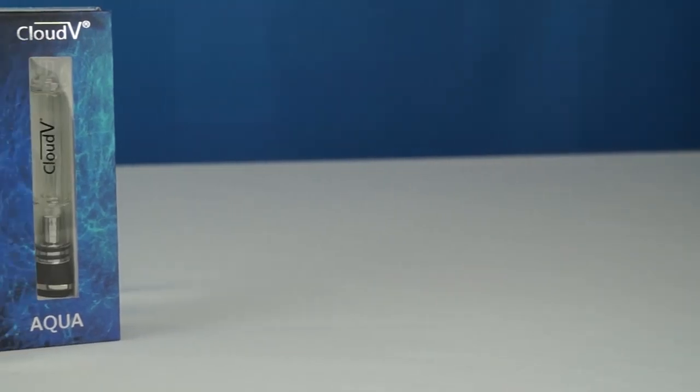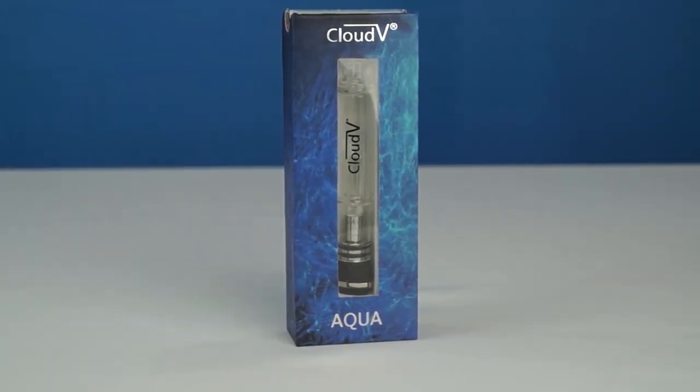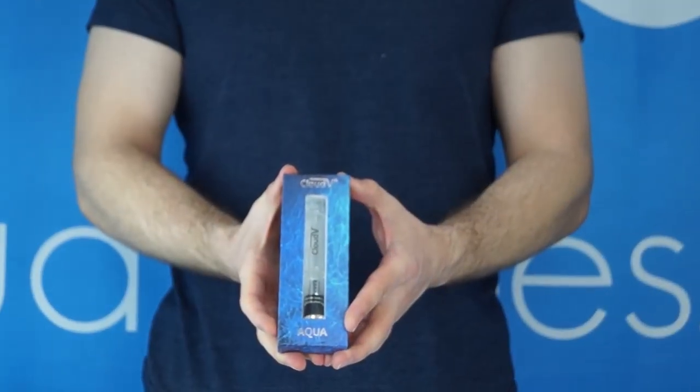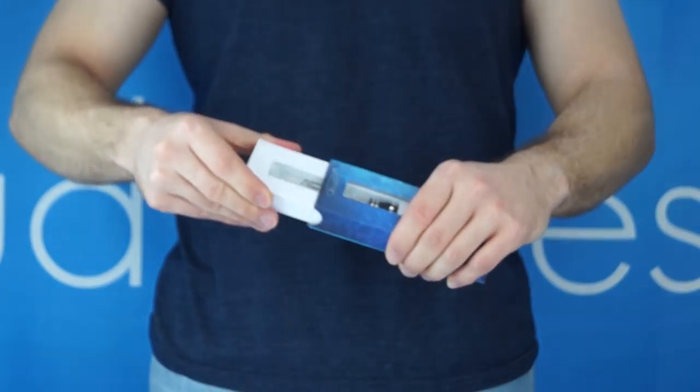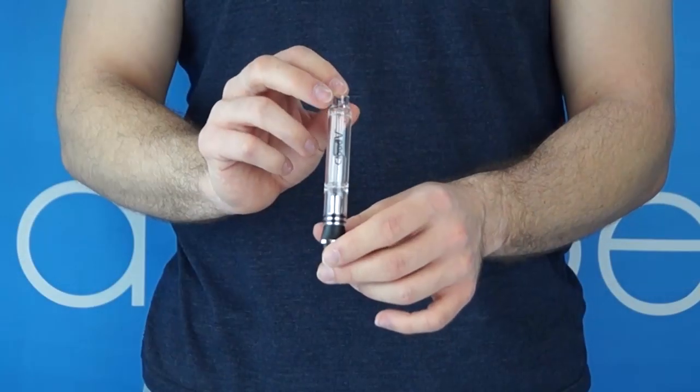Introducing the CloudV aqua non-spill bubbler. The box comes with a glass aqua non-spill bubbler and a globe style atomizer to fit your classic or platinum battery.